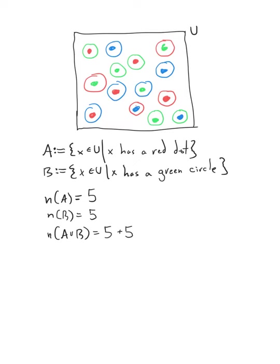So what's going on here? When we add five and five we get 10, but why is there only eight elements that satisfy having a red dot or a green circle? There are a few elements — in fact these two right here — that get counted in both the red dot set and the green circle set. So they're part of this five and part of this five, but we only want to count them once. So we're double counting the two that have both a red dot and a green circle.